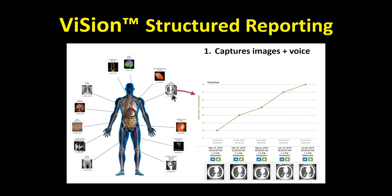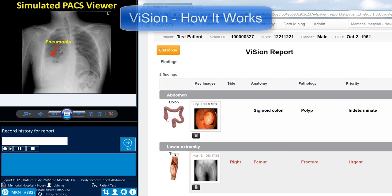Vision is a unique style of structured reporting. It captures images and voice descriptions, tags the images with metadata linked to an ontology, and creates a multimedia report with related information linked in timelines. This is how it works.